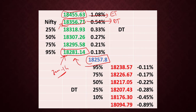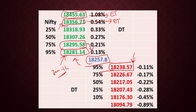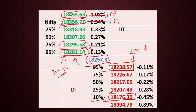If the market couldn't sustain above 18281 or the 18295 level and reverses from there, then we can expect a fall up to 18238. If the market closes below this level and sustains below it for at least 30 minutes to 1 hour, then we can expect a fall up to 18176. If the market closes below that level, we can expect a further fall up to 18094. The 18176 level will be our daily target and 18094 will be the extreme target.